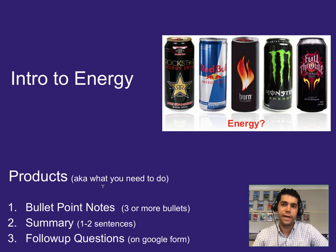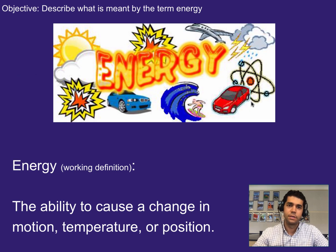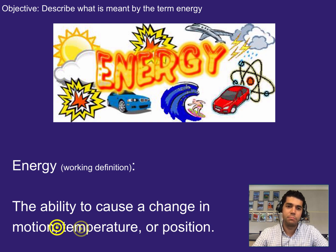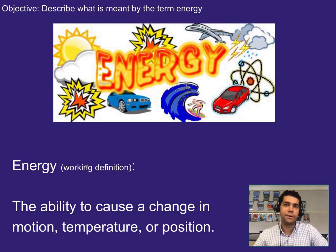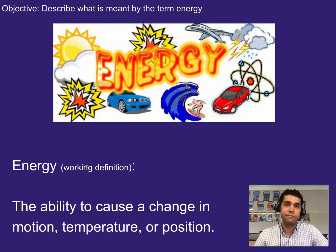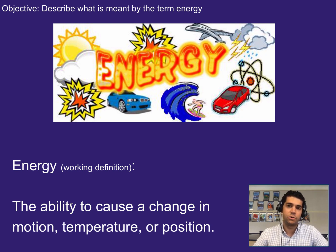This lecture is on an intro to energy, so we're going to look at what energy is. Our working definition of energy is the ability to cause a change in motion, temperature, or position. A working definition just means it's an easy way to think about it — it's not the official definition, just a placeholder until we get an official definition.